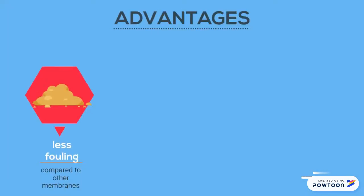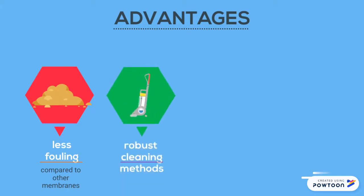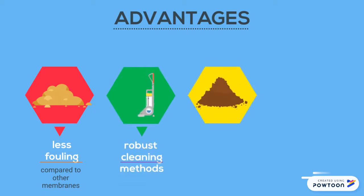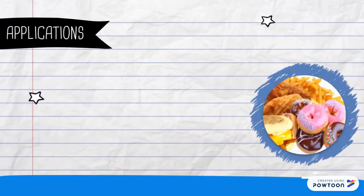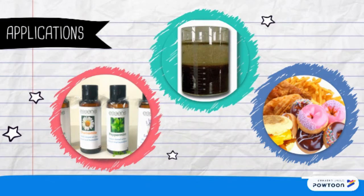Tubular systems have less fouling compared to plate and frame systems. They allow for robust cleaning methods such as the use of harsh chemicals, backwash, and even mechanical cleaning. They can handle the highest solids and emulsified oil load compared to many other membrane types and can be physically cleaned with sponge balls. Common applications include oil-based water treatment, highly suspended solid streams, and lipid and fat processing.